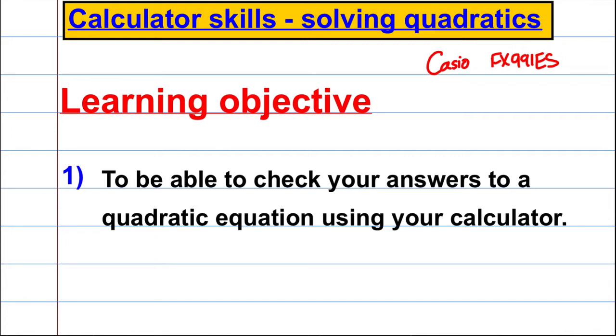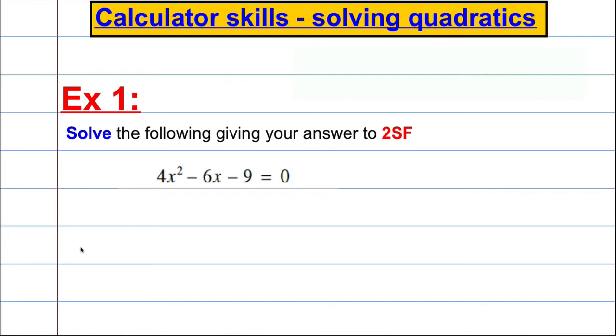So let's show you how to do it. Imagine we're asked to solve the following, giving our answers to two significant figures. 4X squared subtract 6X subtract 9 is 0.